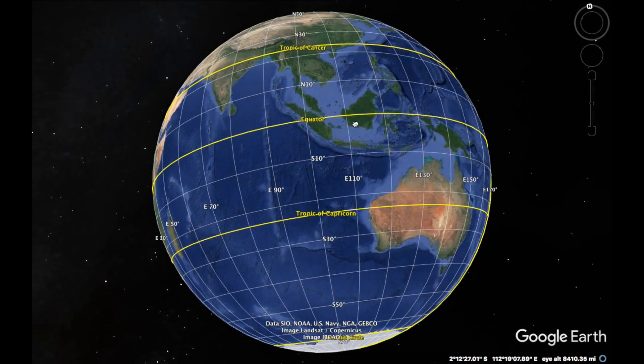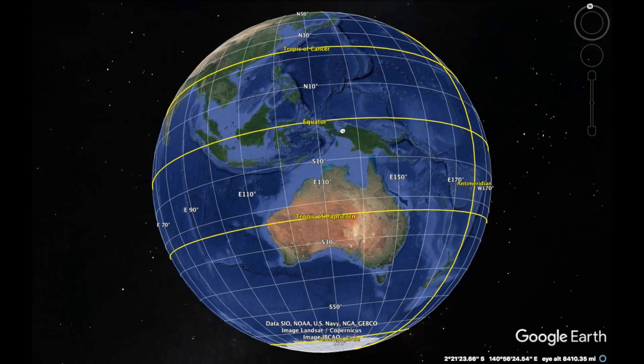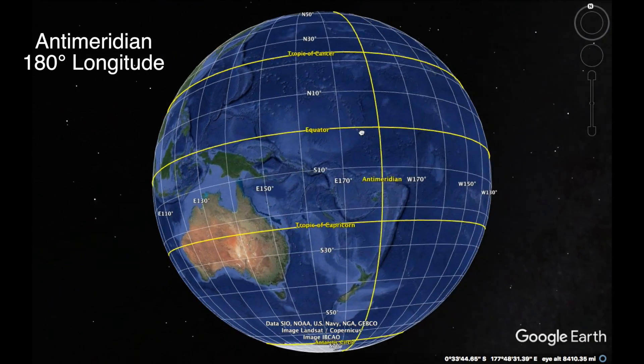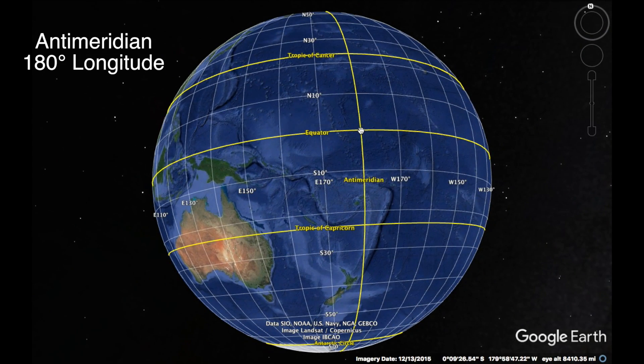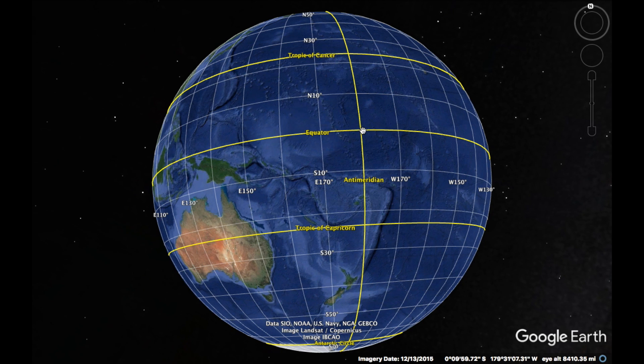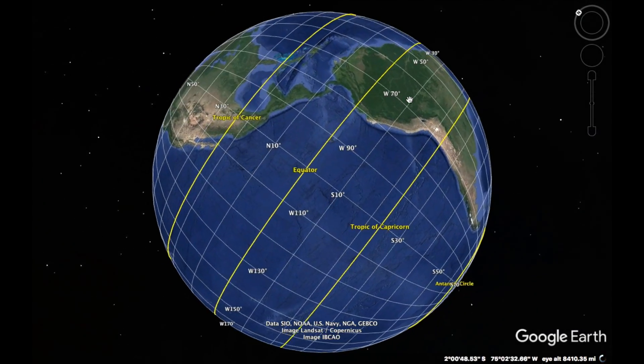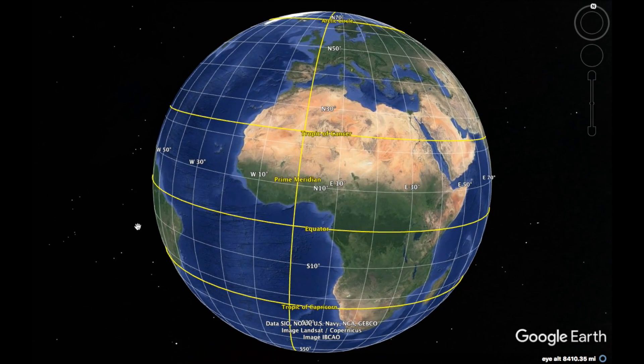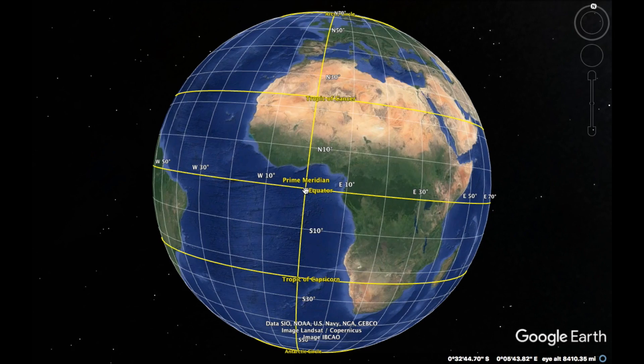I can spin all the way around until I get to the anti-meridian, which would be 180 degrees. Once I go past the anti-meridian, I'm now into the western hemisphere. No longer is a longitude line measured east, but it is measured as a west line.